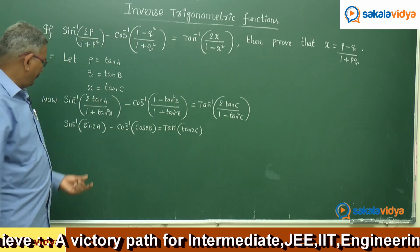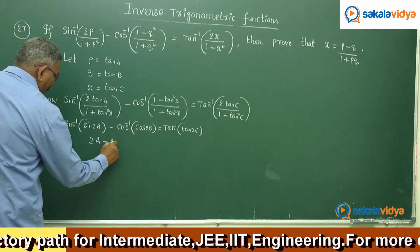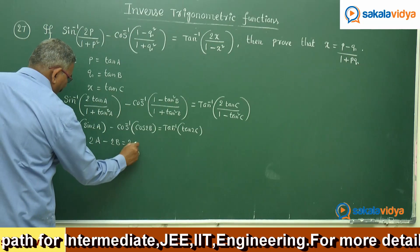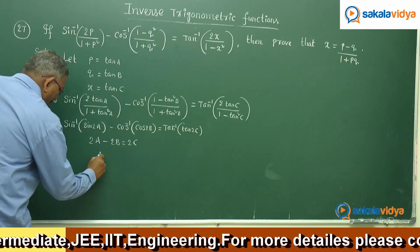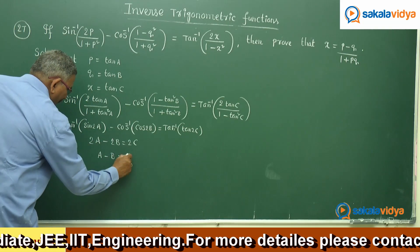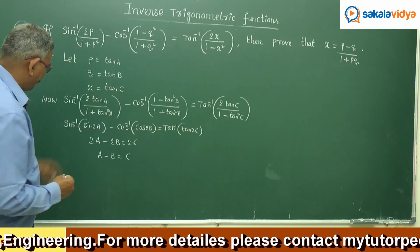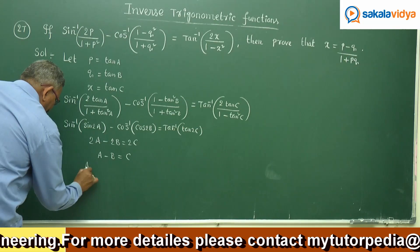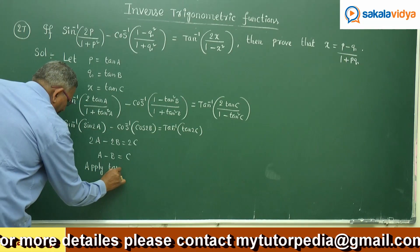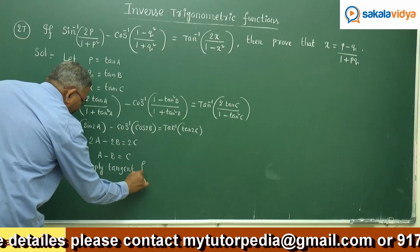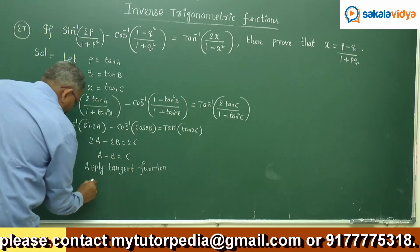Since sin⁻¹(sin θ) = θ, cos⁻¹(cos θ) = θ, and tan⁻¹(tan θ) = θ, we get 2a minus 2b equals 2c. Dividing throughout by 2, we get a minus b equals c. Our aim is to find x, and x is nothing but tan c.